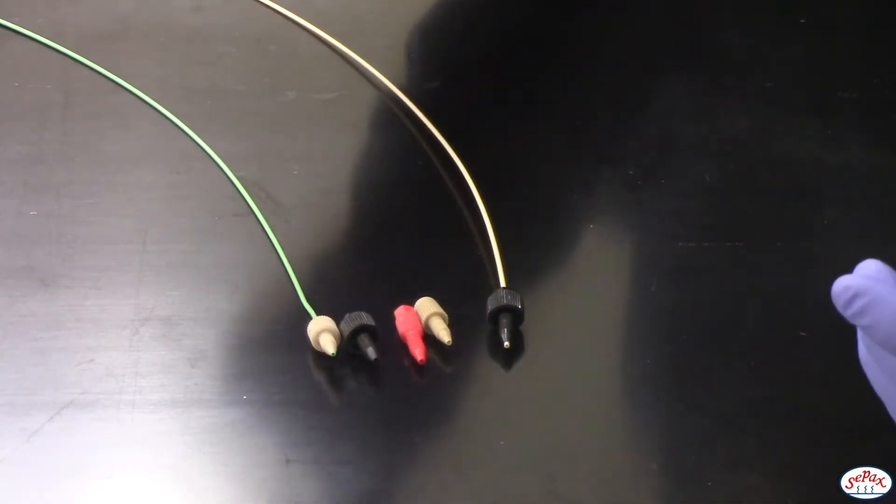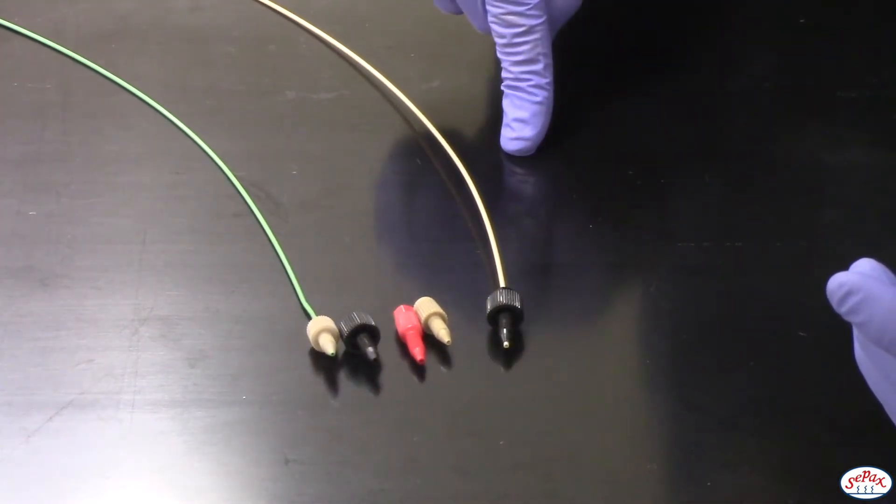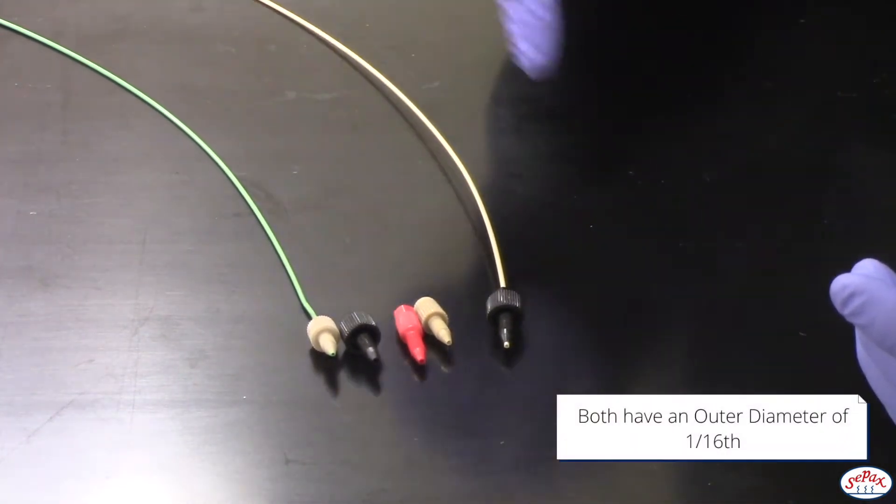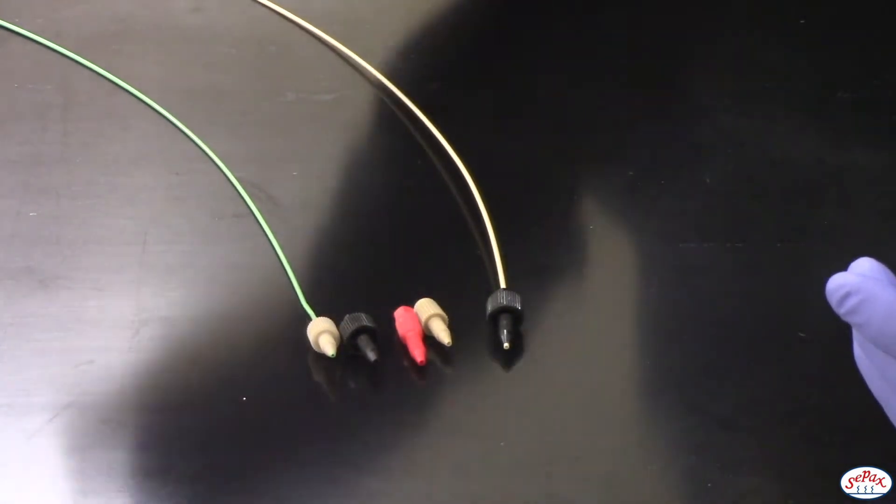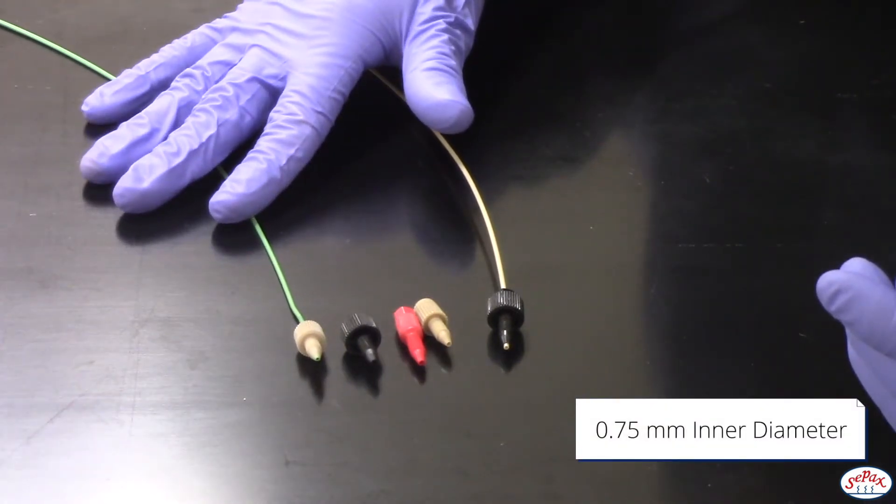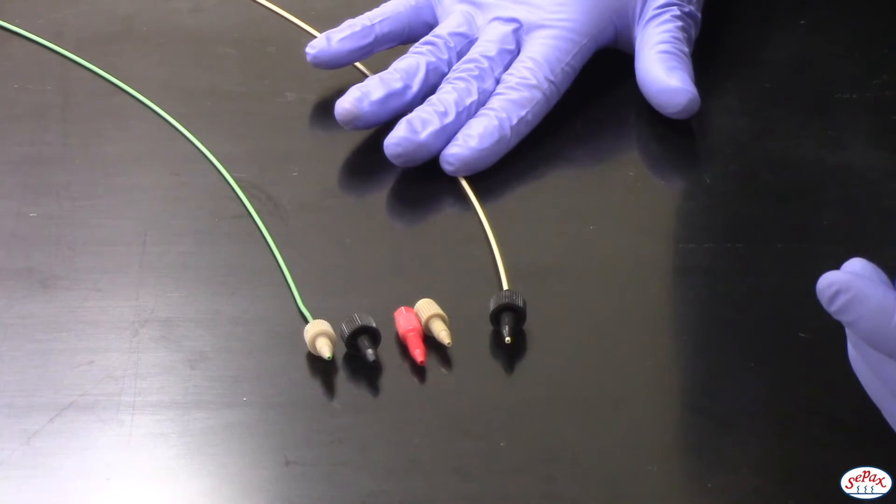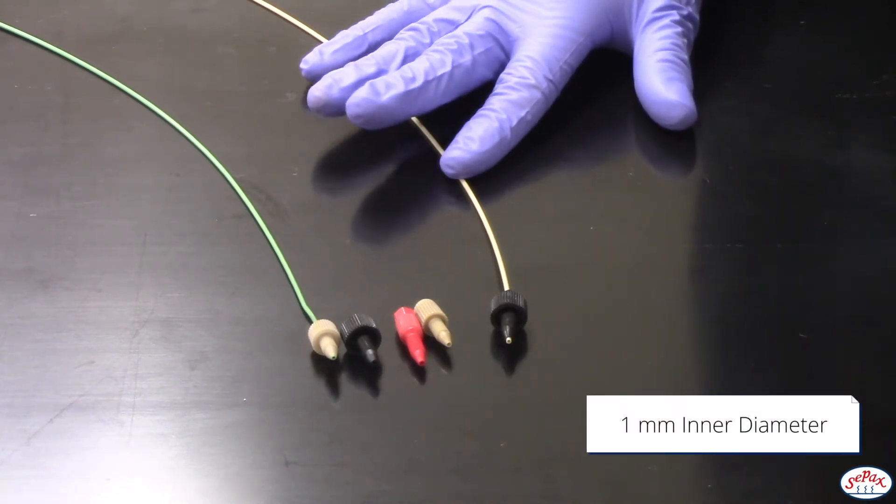So here we have two different color tubings which have different inner diameters. Both have an outer diameter of 1/16th, which allows them to fit with the 1/16th connectors here. The green tubing has an inner diameter of 0.75 millimeter, while the beige tubing has an inner diameter of 1 millimeter.